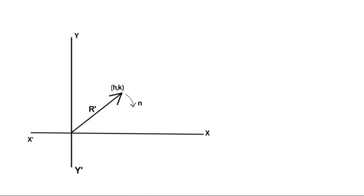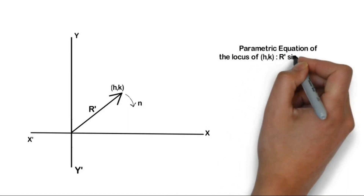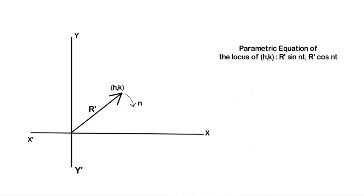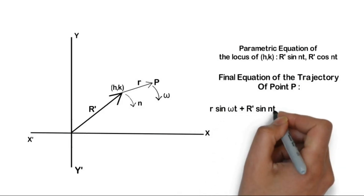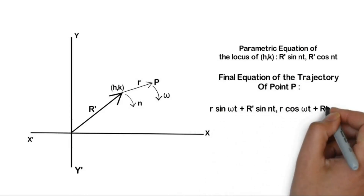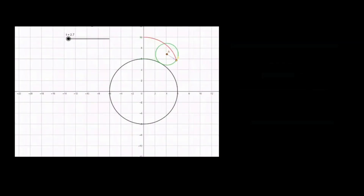Let us make h, k itself rotate, so h, k becomes r-dash sin(nt), r-dash cos(nt). So the final equation becomes r sin(omega t) plus r-dash sin(nt), r cos(omega t) plus r-dash cos(nt). We have arrived at this without ever visualizing rolling — the approach using rotating vectors is similar to Fourier series. Now let us translate this to rolling.